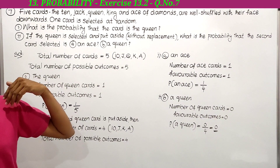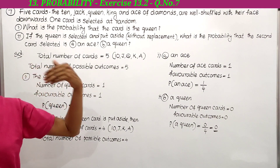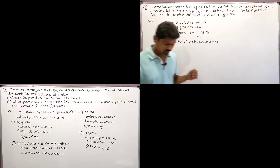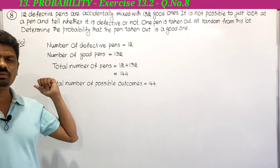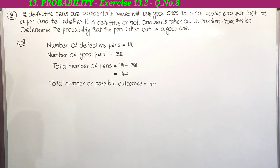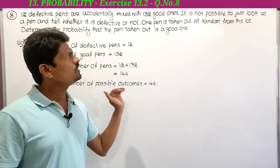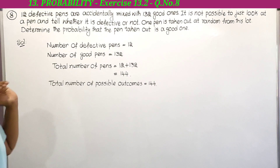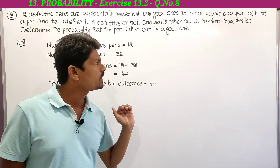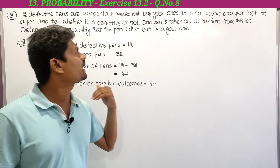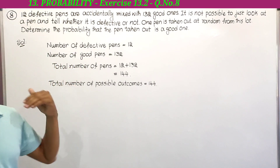So this is the 7th problem. Next we have to solve the 8th problem. This is the 8th problem in exercise 13.2. See here what it is asking: 12 defective pens are accidentally mixed with 132 good ones. It is not possible to just look at a pen and tell whether it is defective or not. One pen is taken out at random from this lot. Determine the probability that the pen taken out is a good pen.